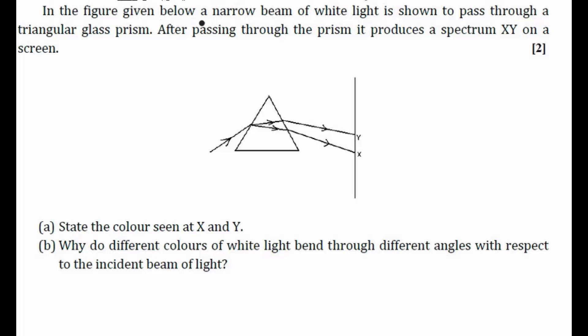In the given figure below, a narrow beam of white light is shown to pass through a triangular glass prism. So this is our white light here. It is allowed to pass through a glass prism. After passing through the prism, it produces a spectrum XY. So this is Y, this is X on a screen. So this is our screen.